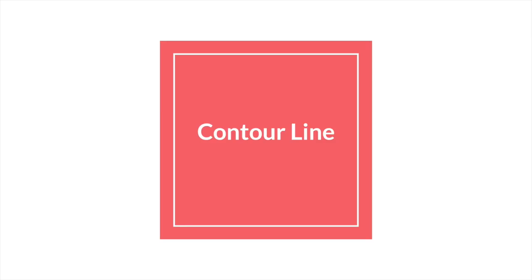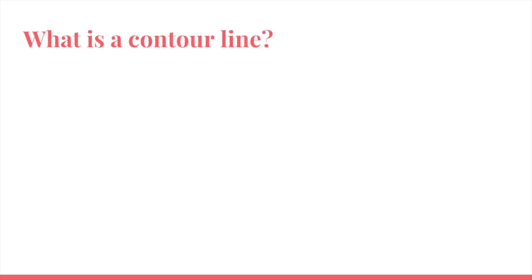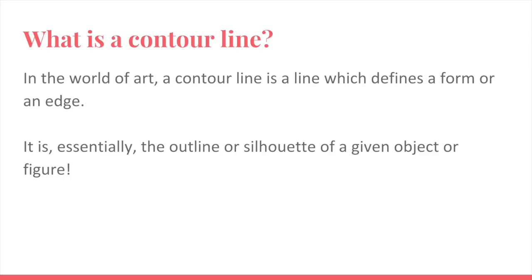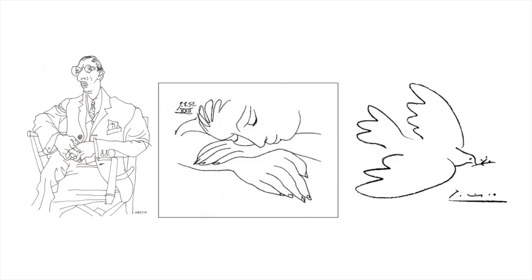As we talk about line, the type of drawings we're going to focus on are what we call contour line drawings. What is a contour line? In the world of art, a contour line is a line which defines a form or an edge — basically an outline of a given object or figure. Looking at the woman in the middle, we understand that her face has form and detail, but it's really only using line to show those outer edges or inside details of the subject.